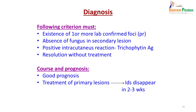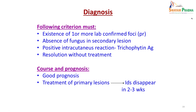Diagnosis of ID reaction requires: existence of one or more lab-confirmed primary foci, absence of fungus from the secondary lesion by microscopy or culture, and a positive intracutaneous reaction using the incriminating fungus. Most often these vesicles resolve without treatment once the primary lesion is treated, so no specific treatment is needed for the vesicles themselves. Prognosis is generally good.